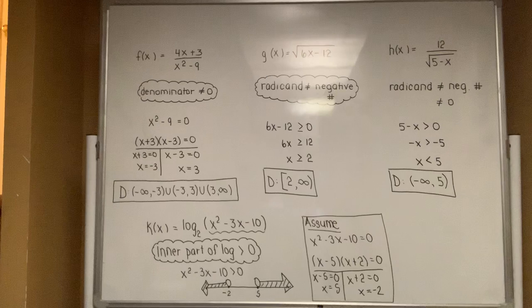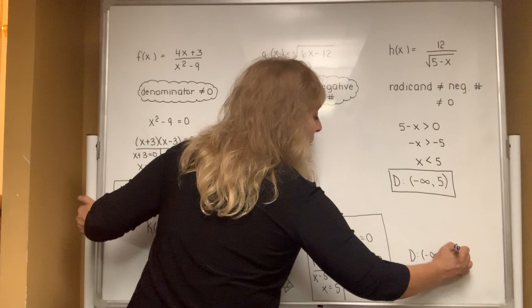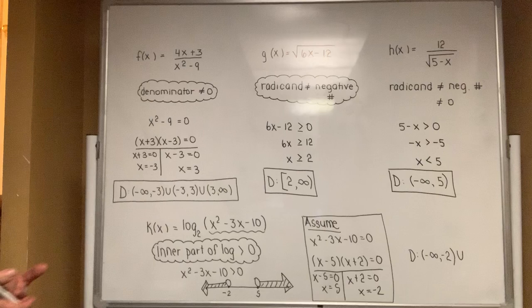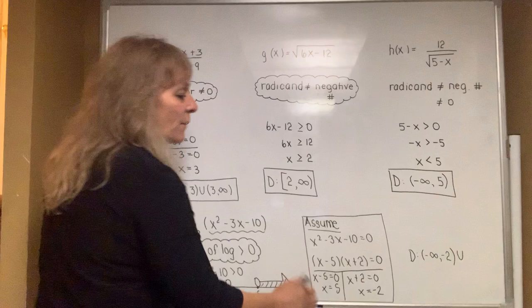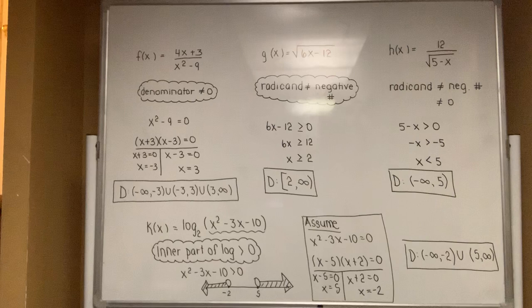I want the answer in interval notation. The piece on the left goes from negative infinity to negative 2, but negative 2 is not included. Then there's a gap in the middle, so you write the union symbol. The shading on the right goes from 5 to infinity, but 5 is not included, so you use parentheses. The domain in interval notation for problem 4 is (−∞, −2) ∪ (5, ∞).